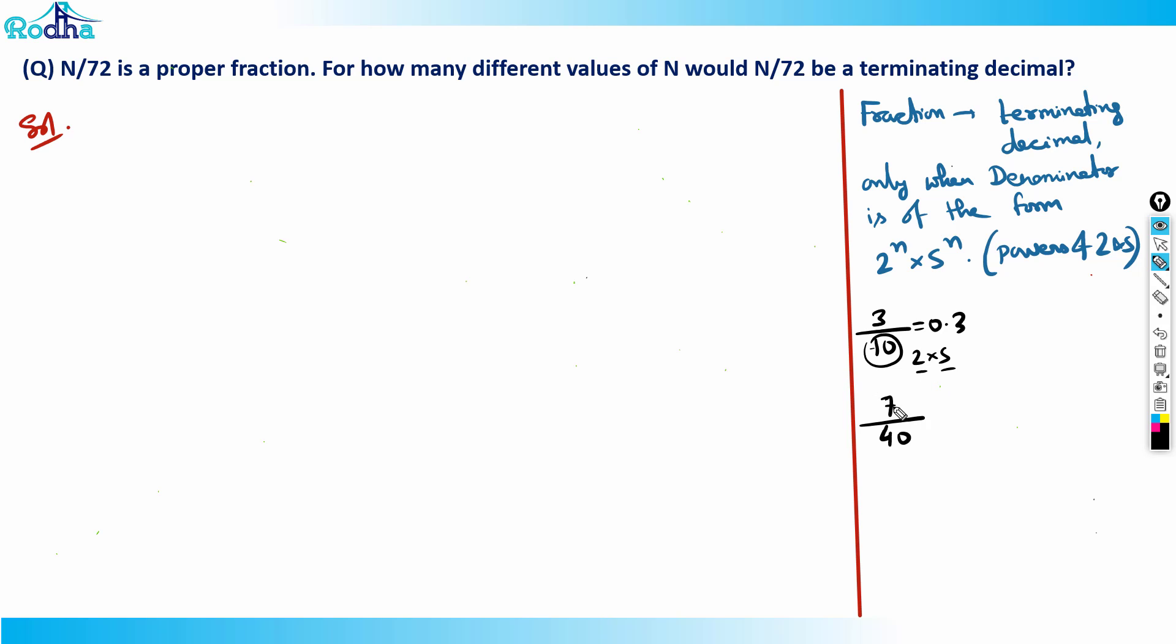For example, if you have 7/40, what is 40? So 40 is 2³ × 5. That means I can make the denominator a power of 10. I can make it 1000. How? 2³ × 5³ is 1000. So I can multiply by 5² in numerator and denominator.